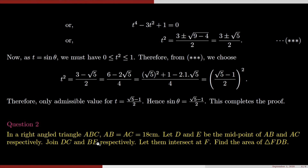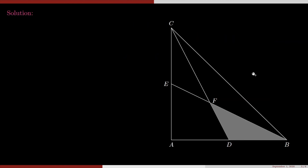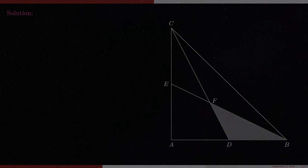Next question — homework for today. In a right-angled triangle ABC, AB = AC = 18 cm. Let D and E be the midpoints of AB and AC respectively. Join DC and BE and let them intersect at F. Find the area of triangle FDB.